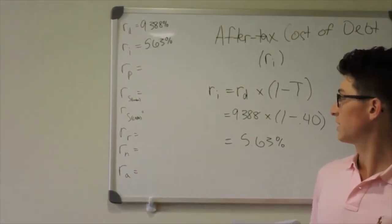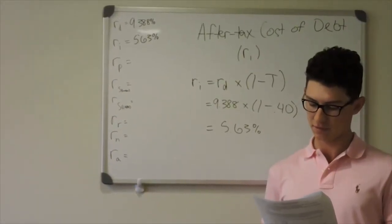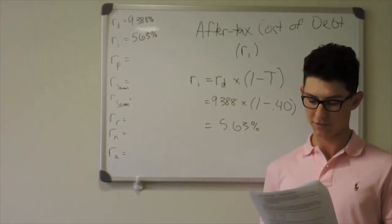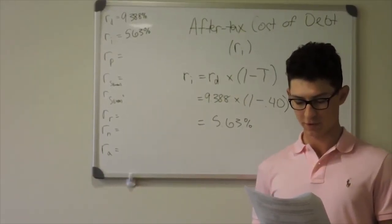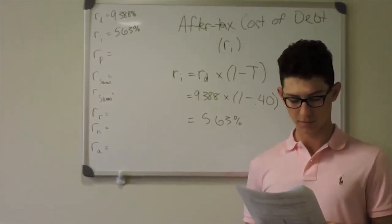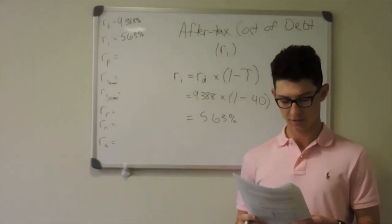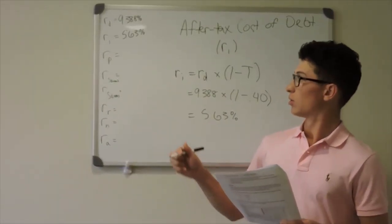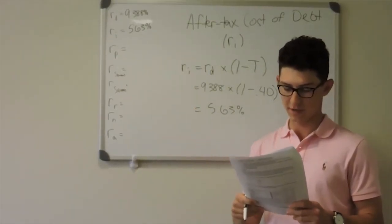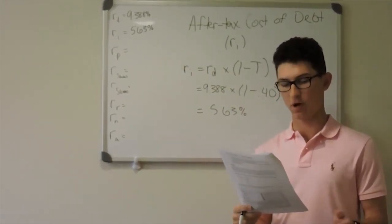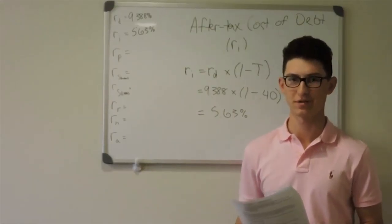Typically the cost of long-term debt for a given firm is less than the cost of preferred or common stock, partly because of the tax deductibility of debt. Once we find the cost of preferred and common stock, we'll compare the percentages.